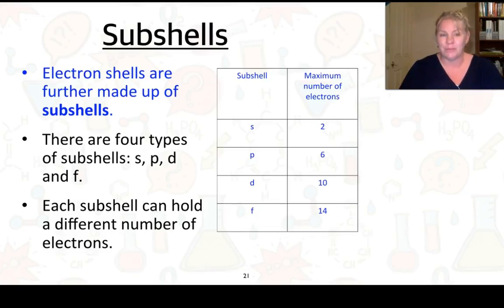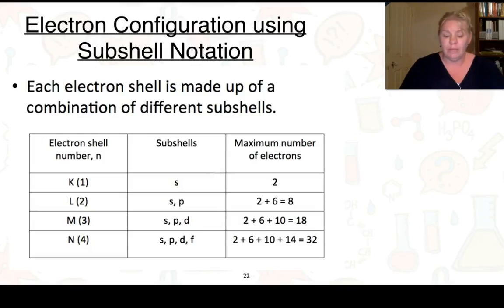Here we go about the subshells. So the main shell is now made up of subshells. And in those subshells, depending on which ones they are, we can fit a certain number of electrons as well. The K shell only could contain 2 electrons, and so they just fit into one subshell. Our L shell could fit 8 electrons. So 2 of those fit into an S subshell, and then 6 into our P, which gives us a total of 8.